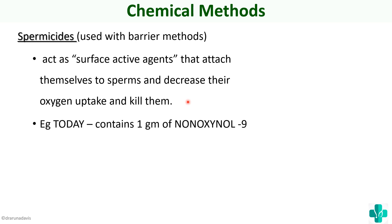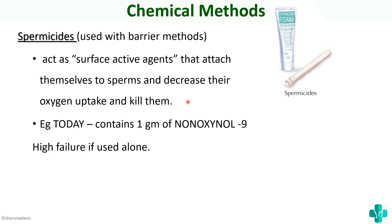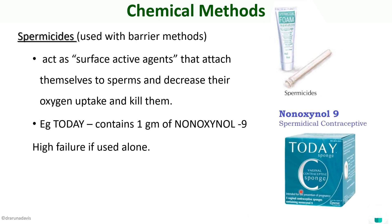Spermicides come in many forms such as spermicidal cream or foam. Nowadays they are also available with the vaginal sponge, which is a combined barrier and chemical contraceptive device. The vaginal sponge contains 1 gram of non-oxinol 9 as the spermicide and is marketed as 'Today.' It functions as both a barrier method and a spermicide.